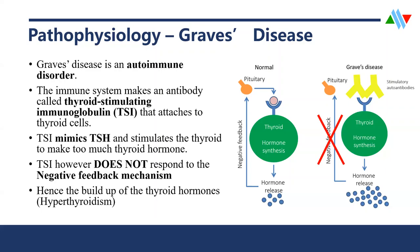However, the only thing TSI doesn't mimic is the response to the negative feedback mechanism. So even when we have produced enough T3 and T4 and a negative feedback signal is sent to tell TSH to stop stimulating the thyroid gland, TSI doesn't respond to that. What happens is that we keep producing more and more thyroid hormones, building up T3 and T4, and we end up with a case of hyperthyroidism.